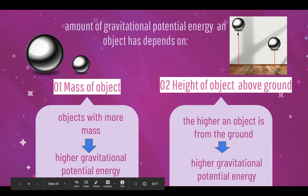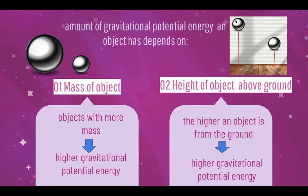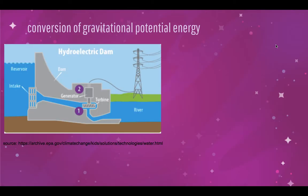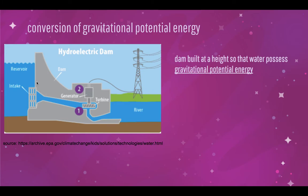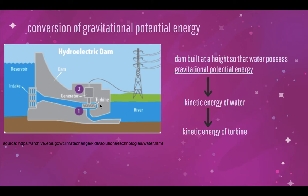So this ball here, which is at a higher height than this ball here — assuming that both of them have the same mass — has higher gravitational potential energy than the ball at a lower height above the ground. So, how does a hydroelectric dam produce electrical energy? The dam is built at a height so that the water possesses gravitational potential energy, which is then converted to the kinetic energy of the water, which is then converted to the kinetic energy of the turbine, which produces electrical energy.